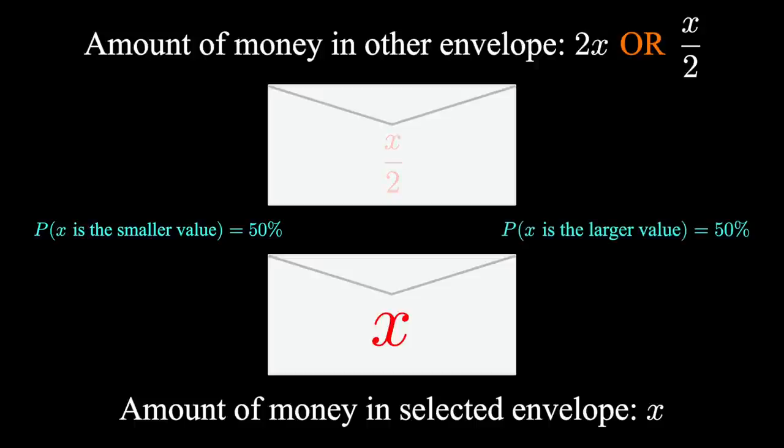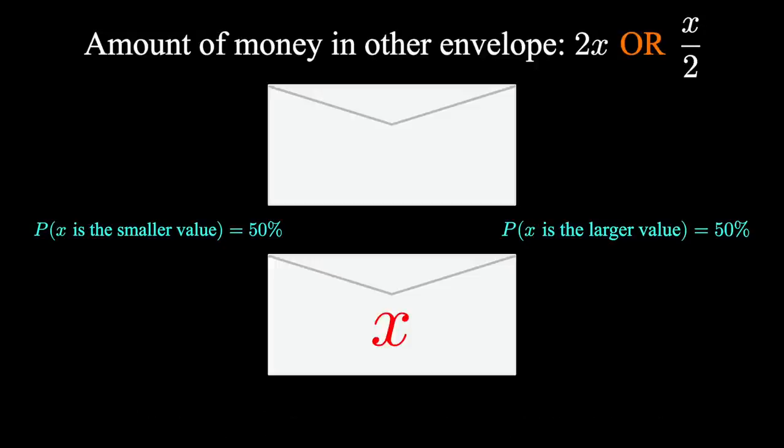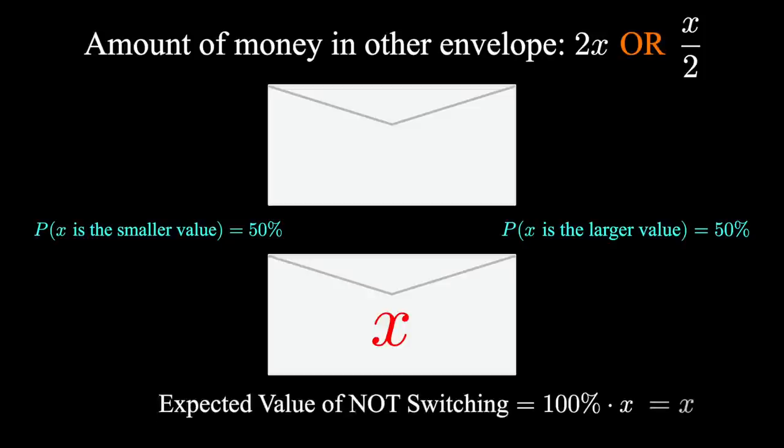Using these probabilities, we can calculate what's called the expected value. That is, the amount we expect to earn by switching or not. If we don't switch, the expected value is easy. We get x with 100% probability.